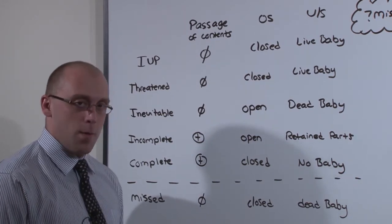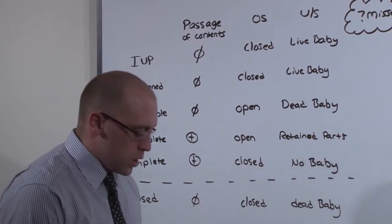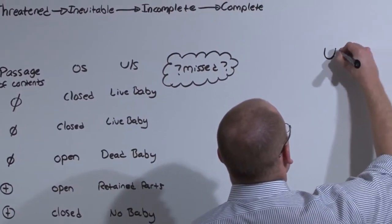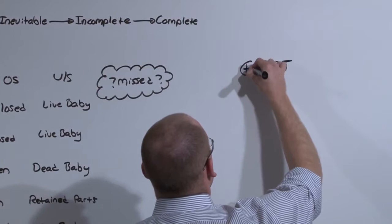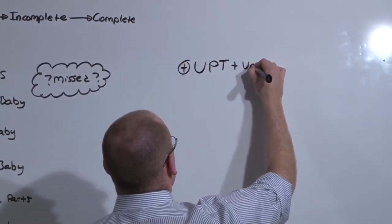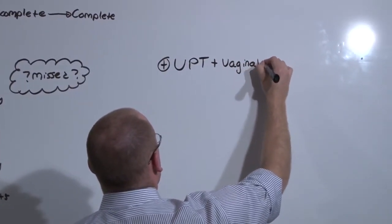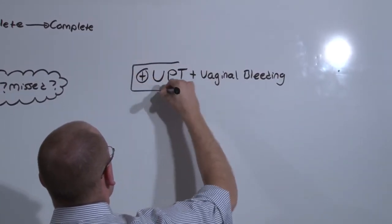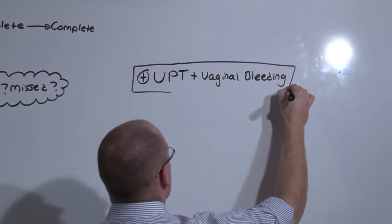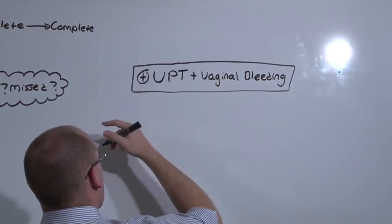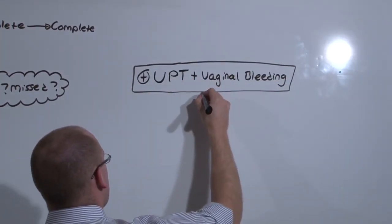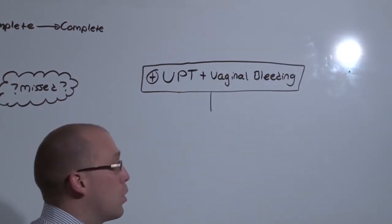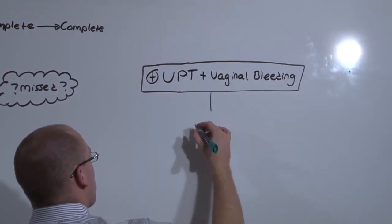Let's now talk about ectopic pregnancies. Someone who comes in with a urine pregnancy test that's positive and is having vaginal bleeding. It may be normal. Vaginal bleeding during pregnancy, especially early on, a little bit of spotting, isn't necessarily a big deal. But you really want to find out.